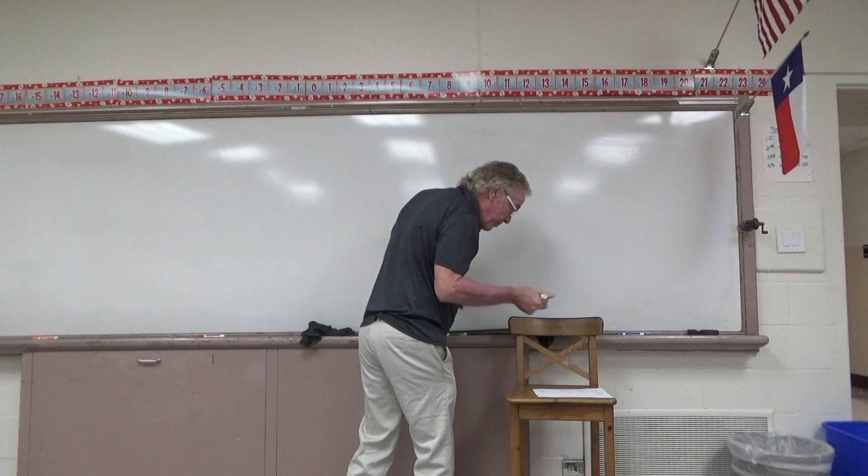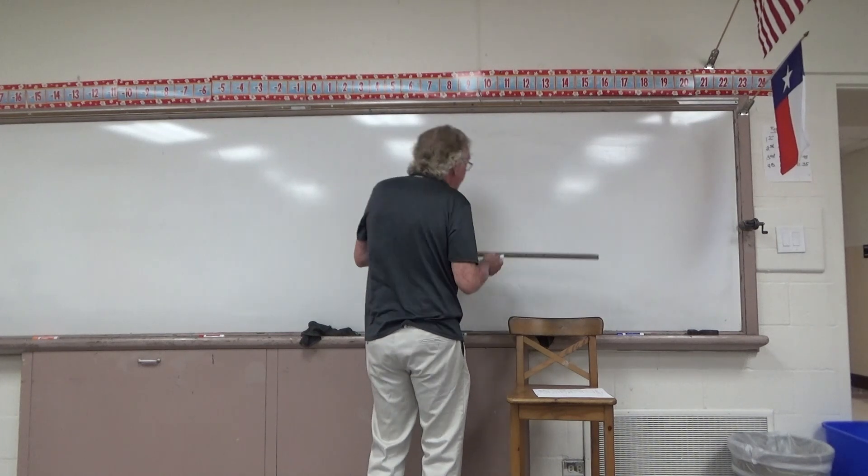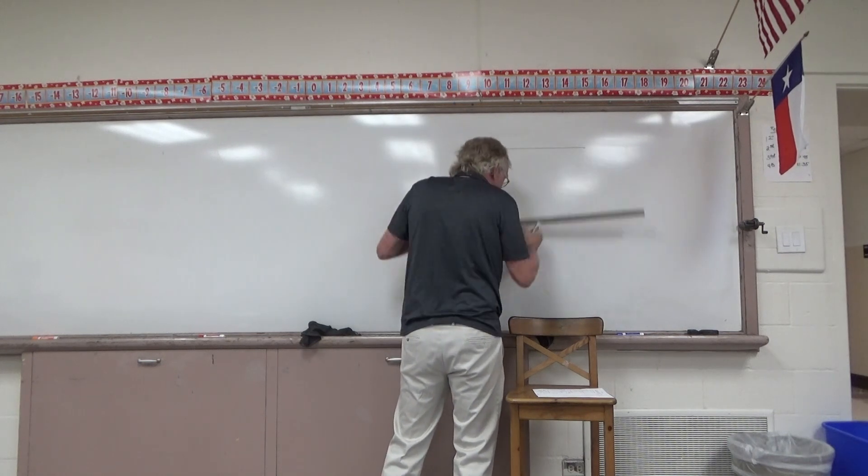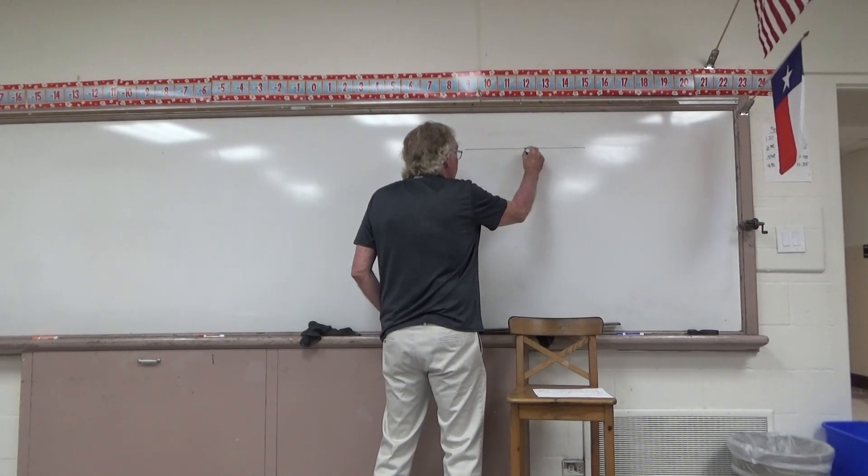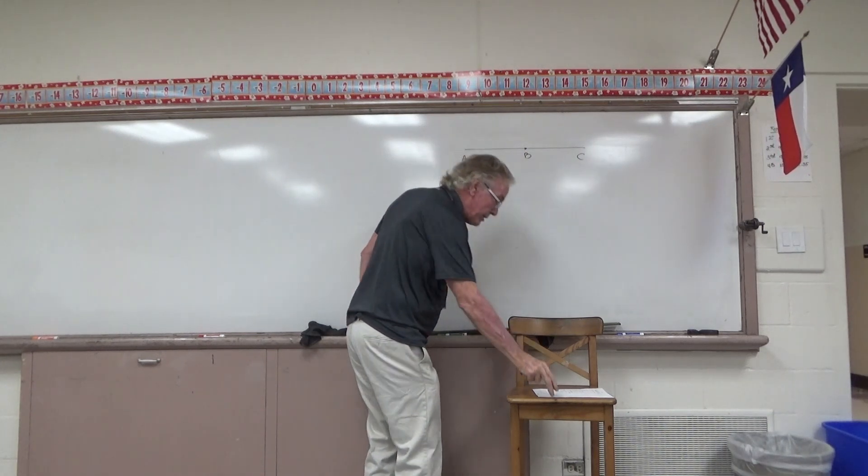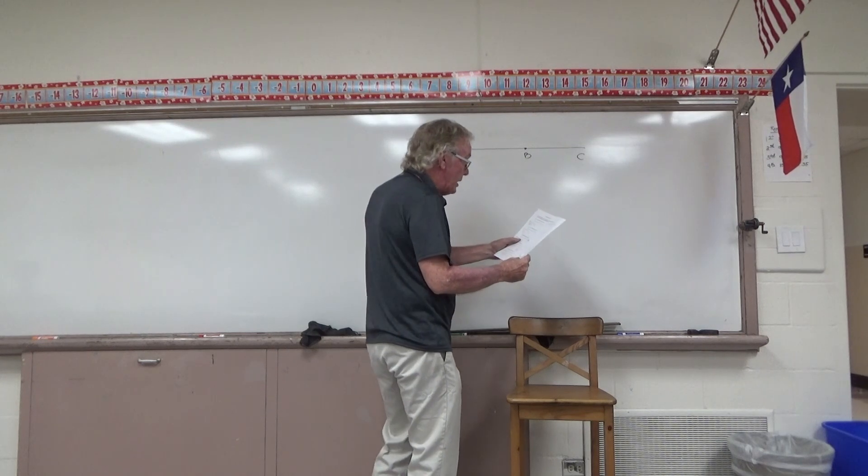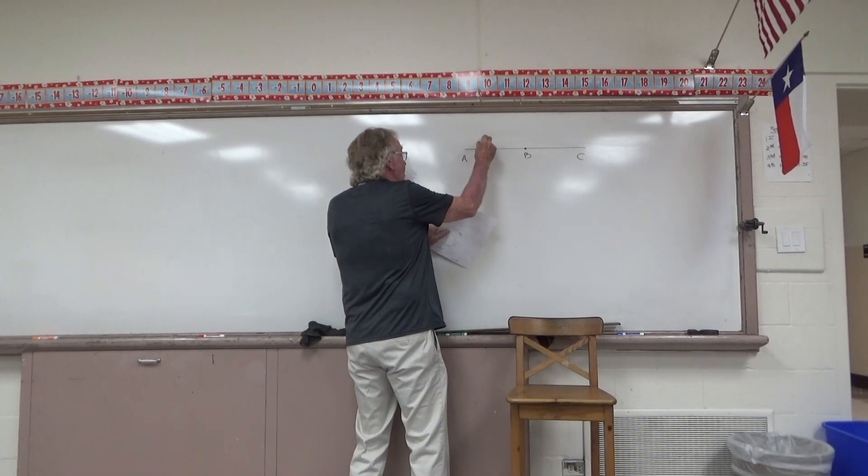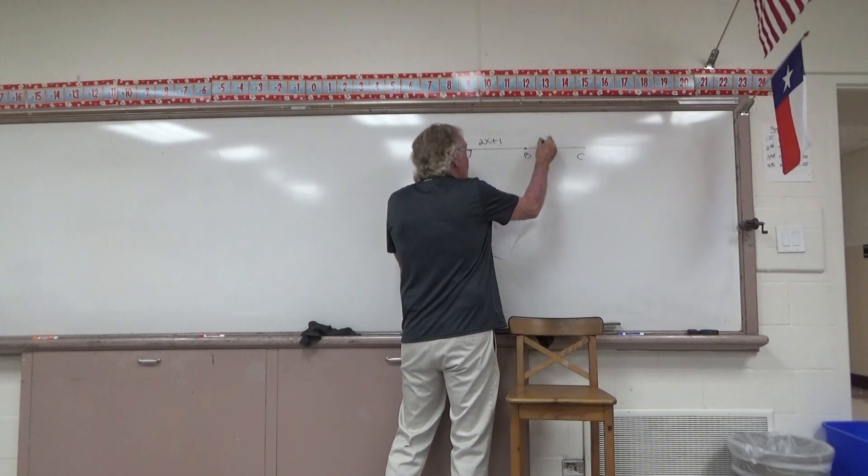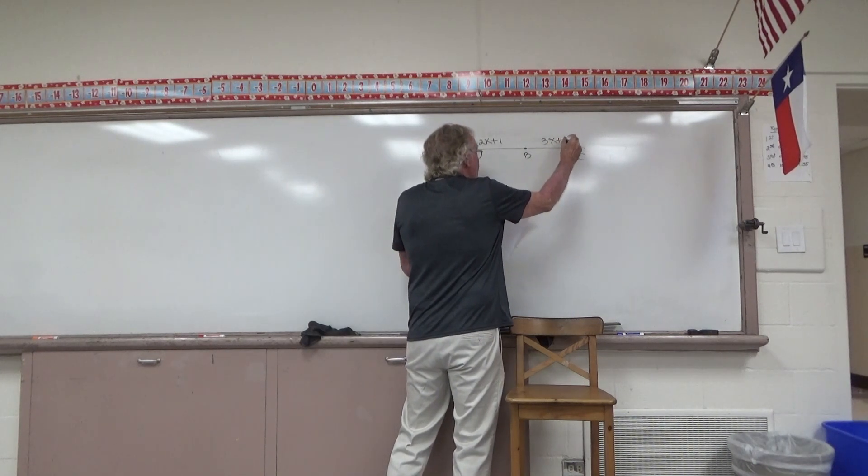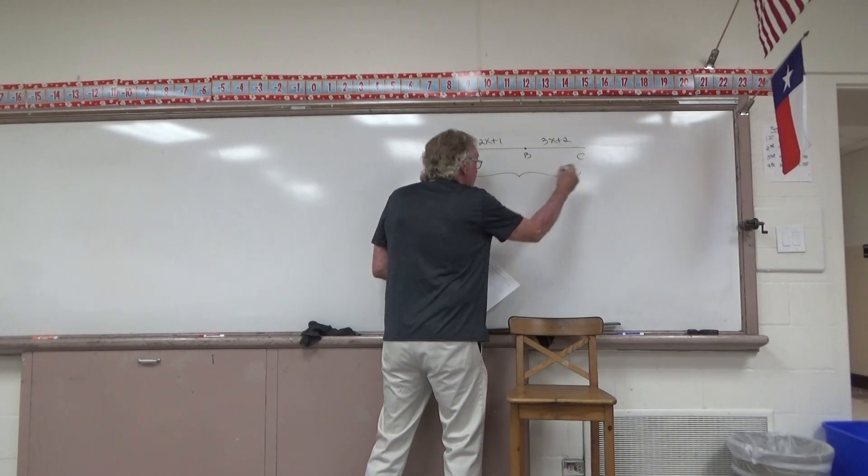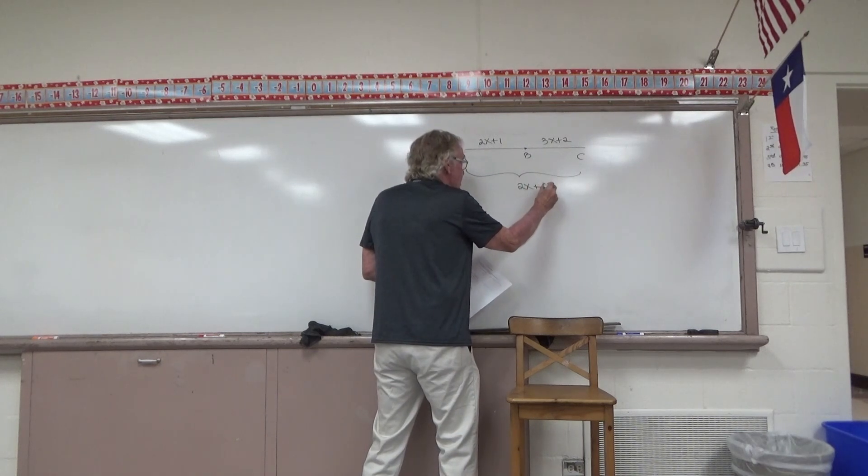On the third case, I'm told that B is between A and C. I'll make such a sketch, showing a point B somewhere between A and C. And in this case, I'm told that AB is 2X plus 1. BC is 3X plus 2. While AC is 2X plus 30.